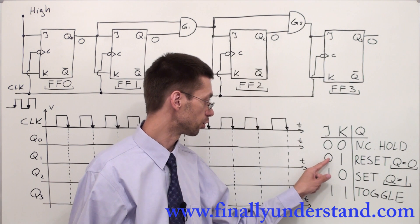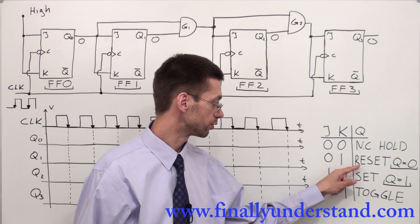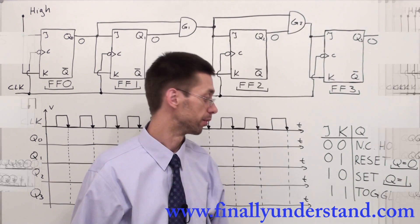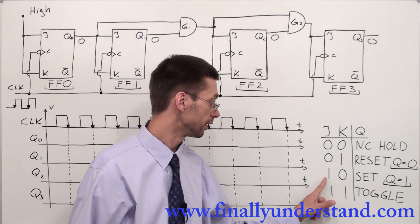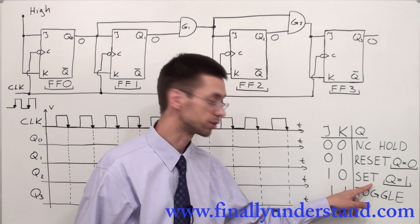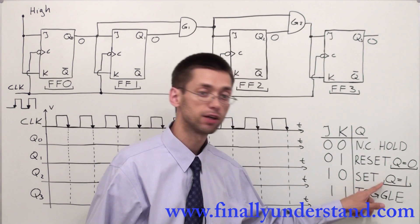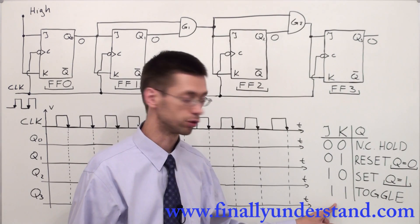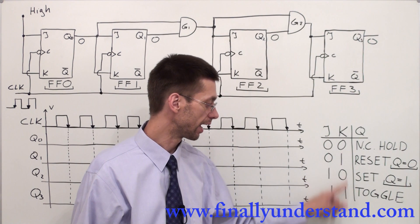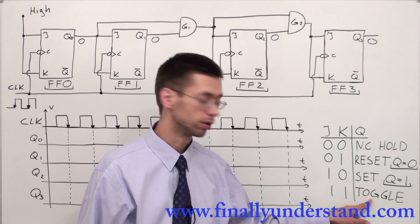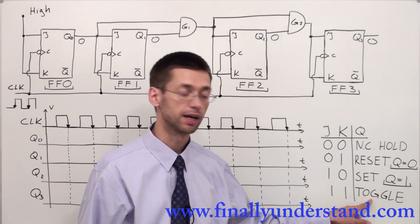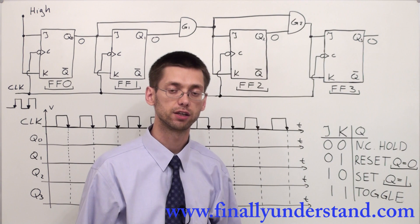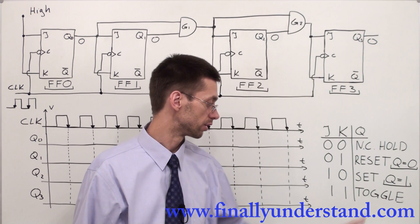Any time you apply 0 to J and 1 to K, you set the flip-flop to reset mode, meaning Q is going to be always 0 after each clock pulse. If you have 1 sent to J and 0 to K, you set the flip-flop to set mode, meaning the output is always 1 after triggering. If you apply 1 to both J and K, you set the flip-flop to toggle mode — it changes its state on every clock pulse, from 0 to 1 or from 1 to 0. Toggle means constantly changing.